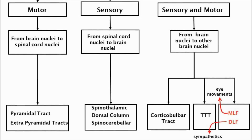The full name of the dorsal column pathway is in fact the dorsal column medial-lemniscal pathway. It carries discriminatory touch — being able to tell the feeling of two objects apart — and something known as proprioceptive information. This is joint position sense and allows you to know where your limbs are in space without having to look. The spinocerebellar tract carries proprioceptive information too, but this is not consciously controlled and, as its name suggests, it goes to the cerebellum and not to the cerebral cortex.